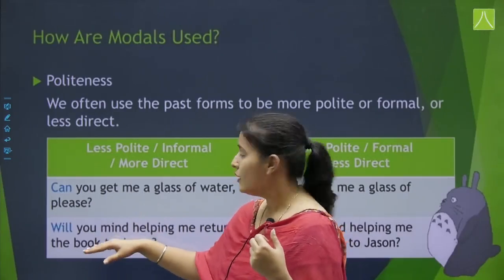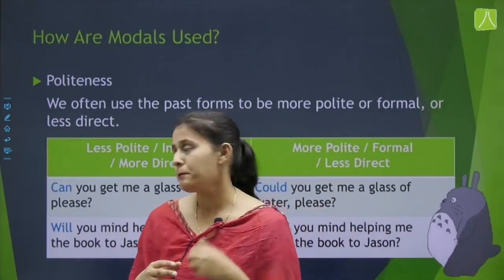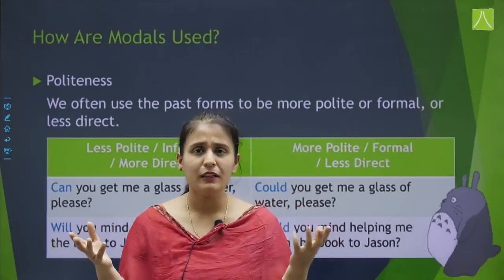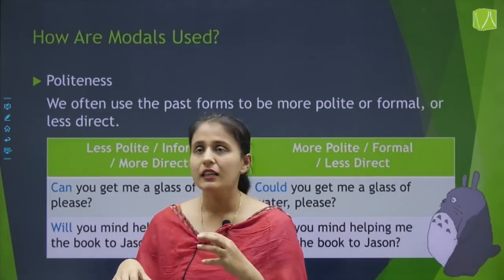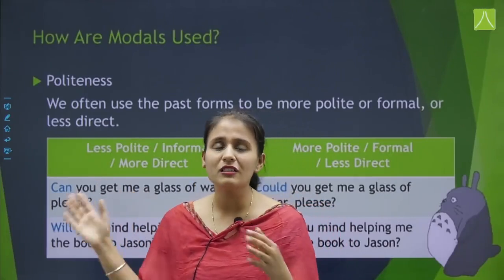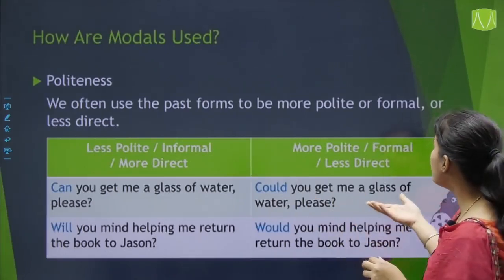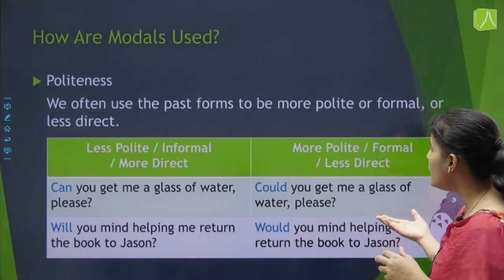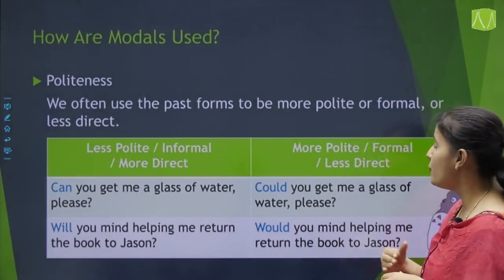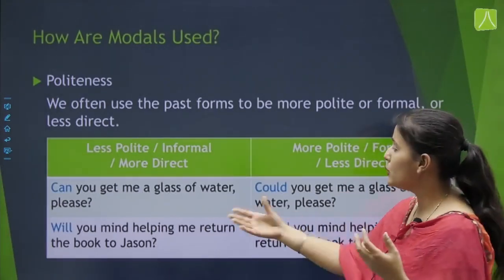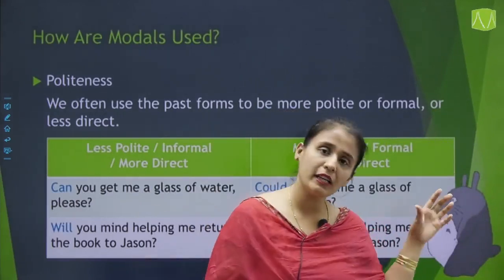Kisi ko bol rahe hain ki kya tum mere saath chaloge — hum apne friends se request nahi karte, hum seedha bolte hain, chalo. Ab yahan par more polite mein kya ho sakta hai? 'Could you get me a glass of water, please?' — yeh bahut formal aur less direct kind of permission hai, hum ise more polite bhi bolte hain. Next word hai would — 'Would you mind helping me return the book to Jason?' — humne dono tarah ke sentences dekhe aur samjha ki informal aur formal permission kaise leni hai.